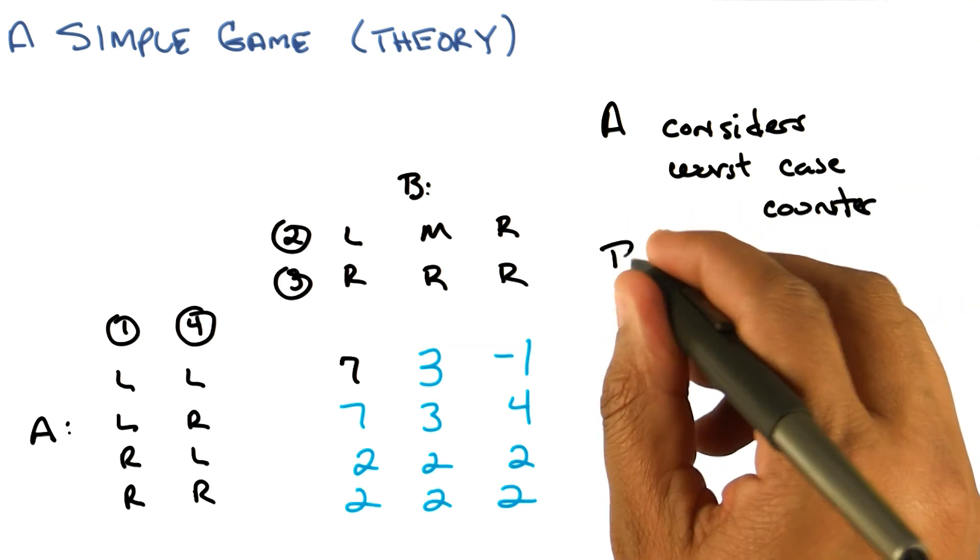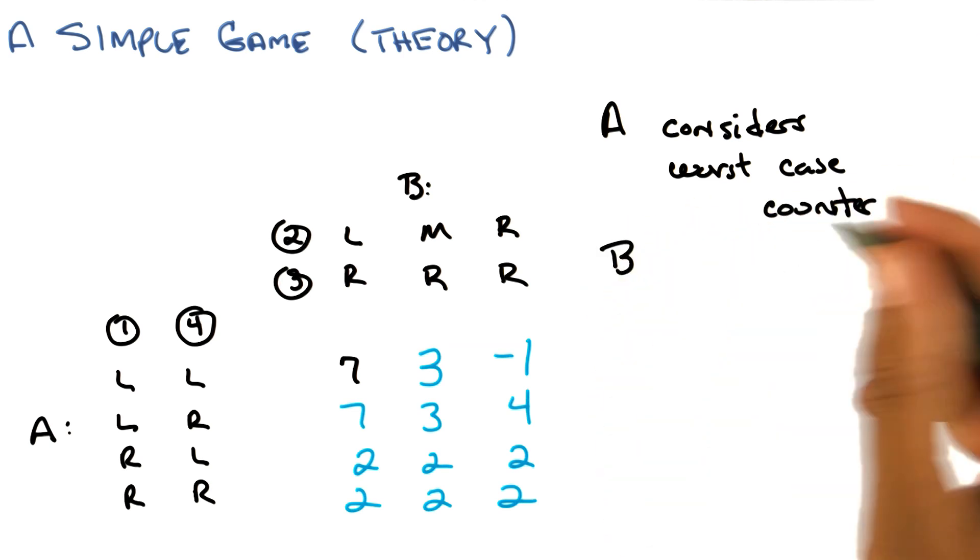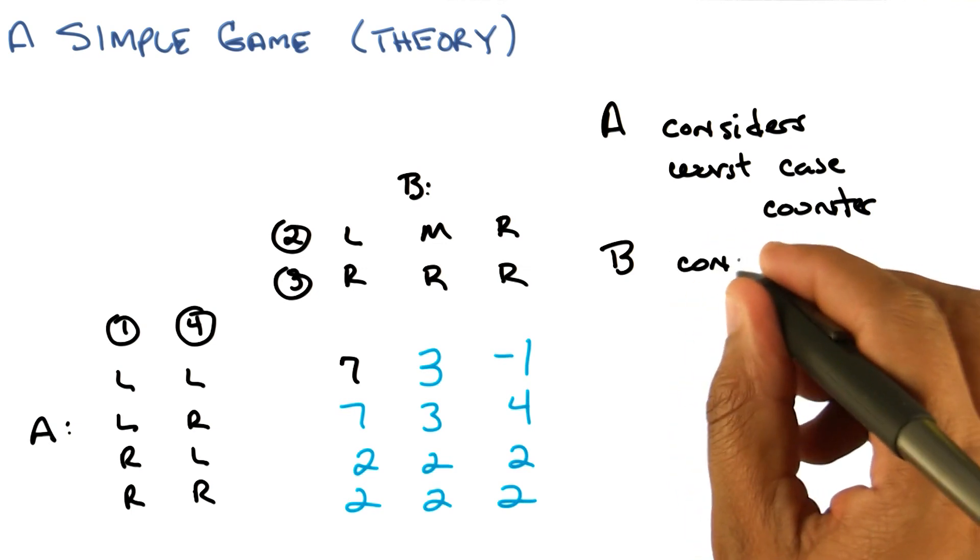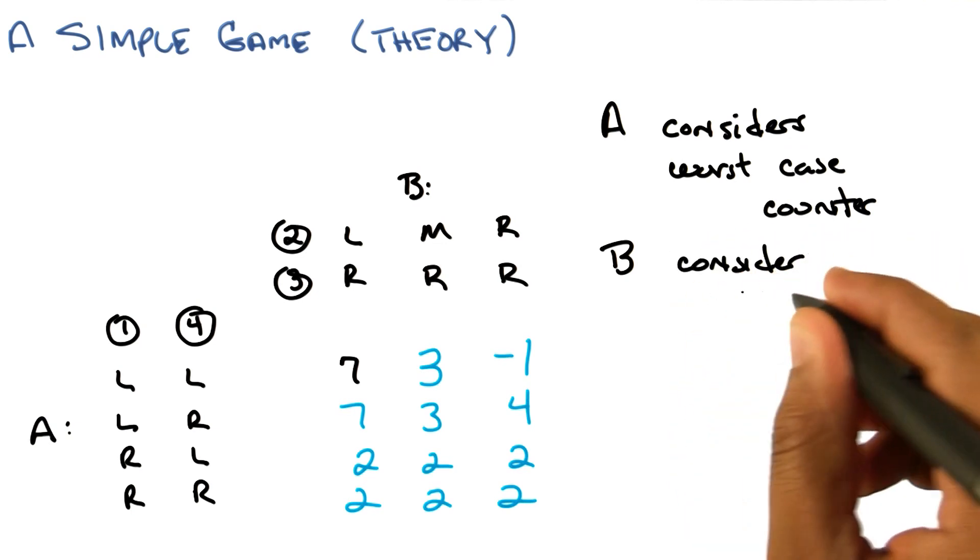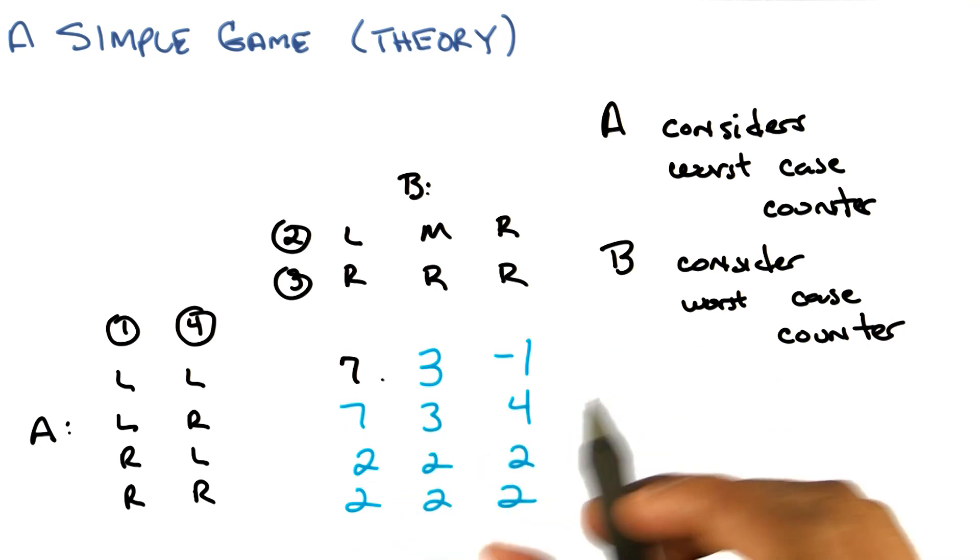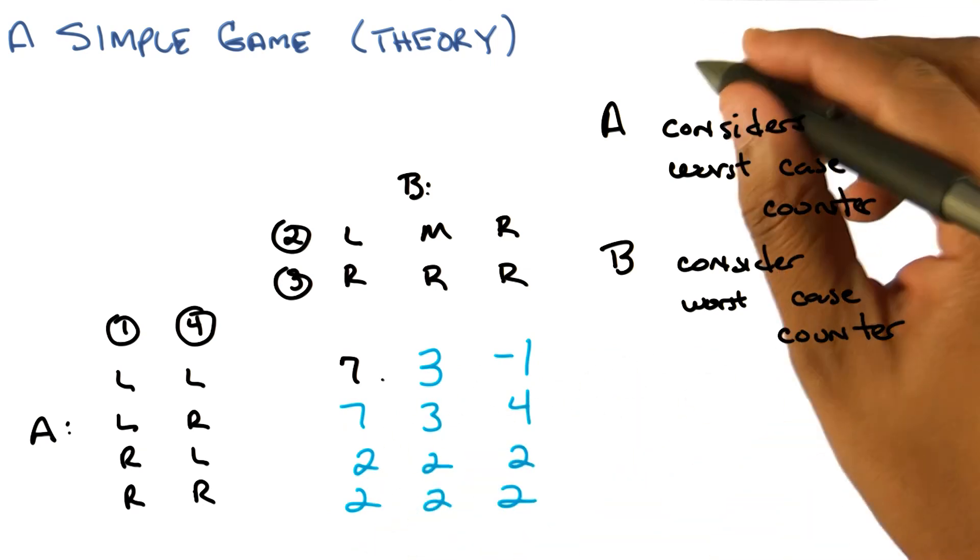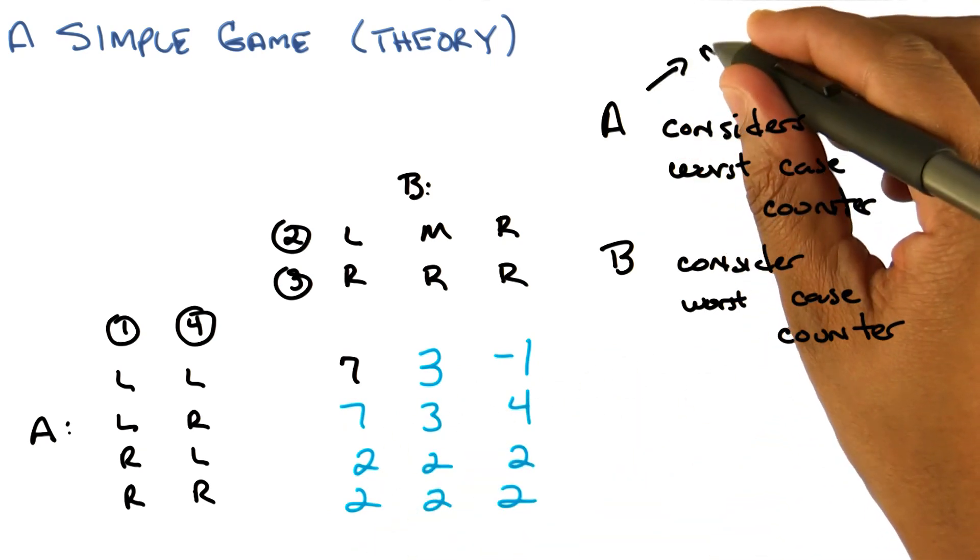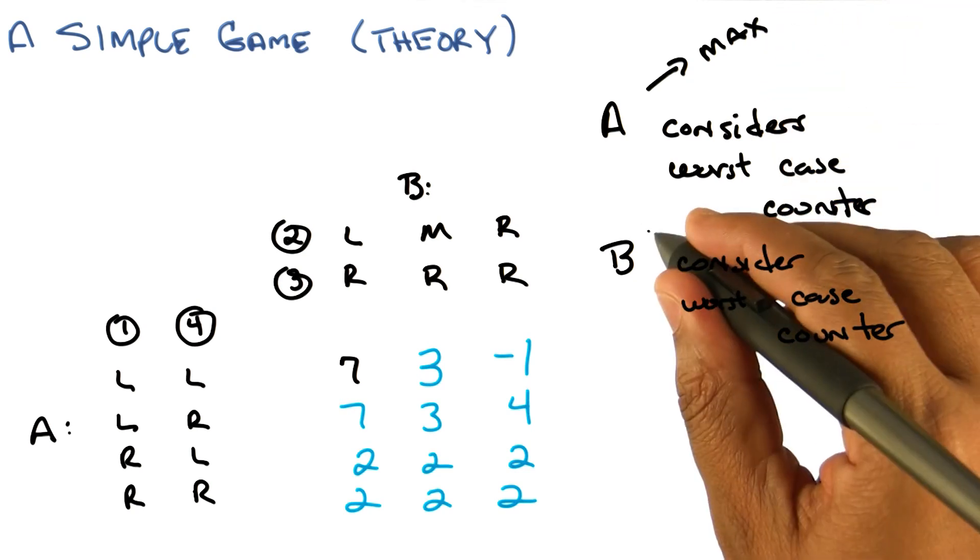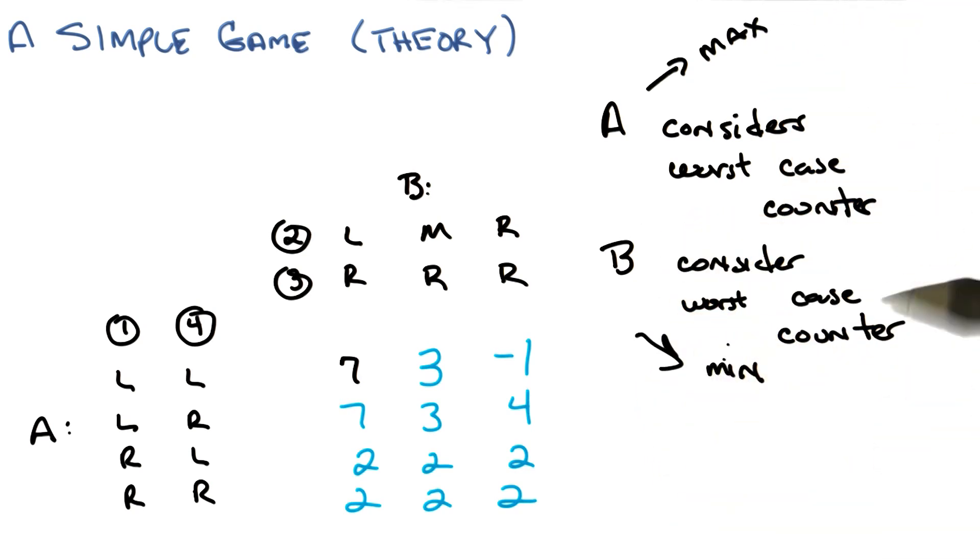Right. And in fact, when you try to do it the other way with B, well B has to do the same thing. B has to consider the worst-case counter as well. And in this particular case, the way we've set it up where the value is for A, A is always therefore trying to maximize, and B is always trying to minimize A, which works out to be the same thing as maximizing itself. Does that make sense?